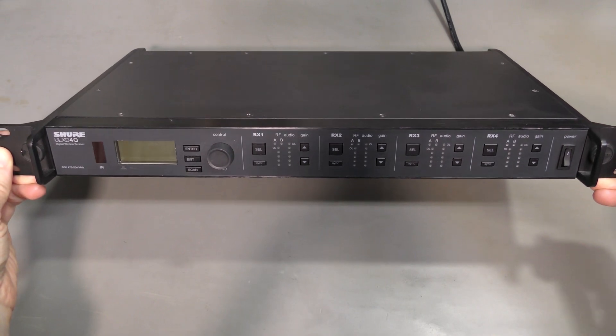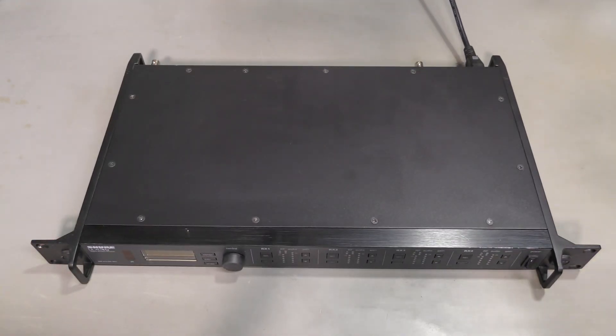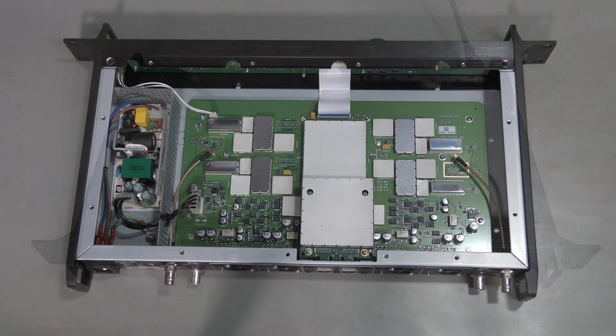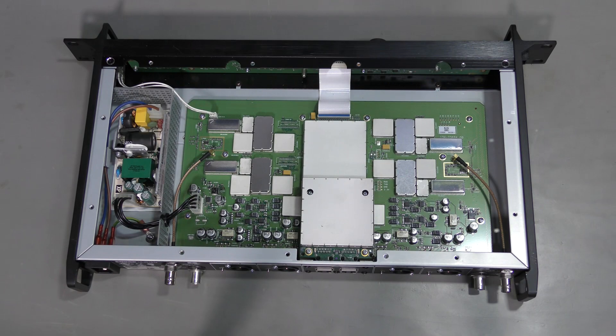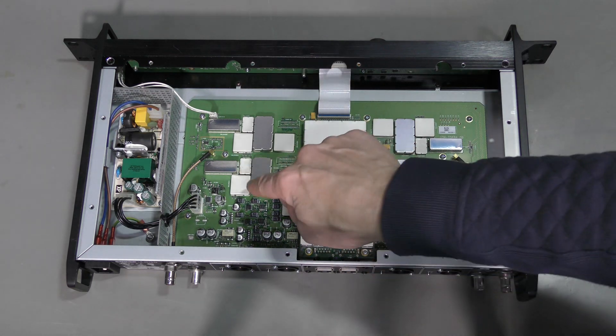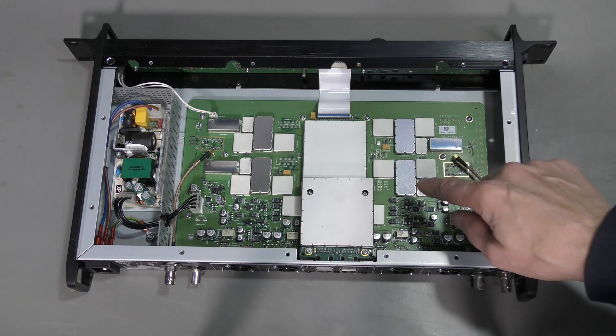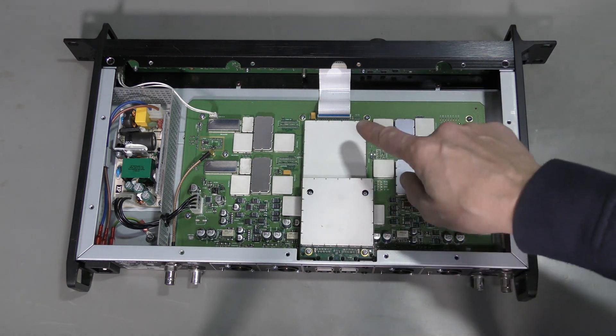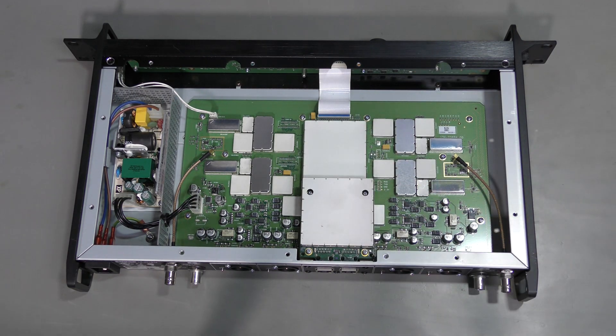Nothing happens. Let's take a look. Here we are inside. What do we see? Power supply here, 4 separate RF channels, digital stuff in the middle, including this separate Dante network module.